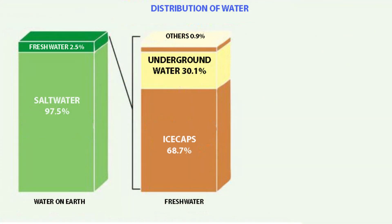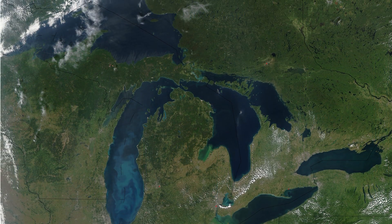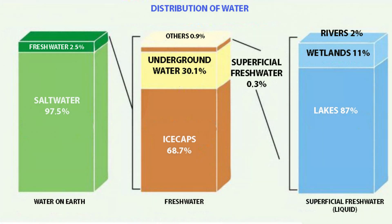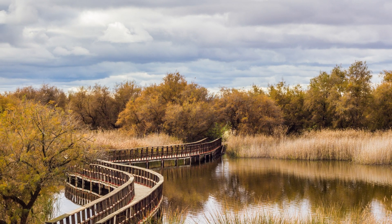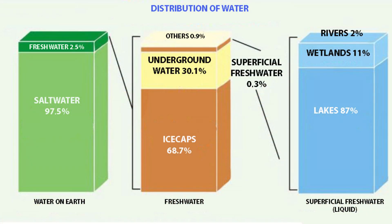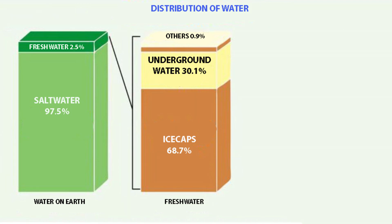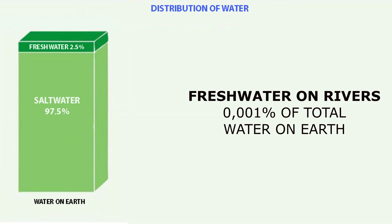Other sources of freshwater take up 0.9%, which leaves only 0.3% of freshwater on the surface. And of this 0.3%, 87% is in lakes, such as the Great Lakes of North America or Lake Victoria in Africa. 11% is in wetlands, also known as swamps — areas of amazingly high biodiversity. And finally, only 2% of the surface freshwater flows through rivers, which is a minuscule amount. In terms of all global water, only about 0.0001% of our planet's water is flowing through rivers.